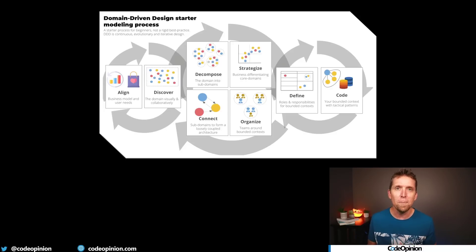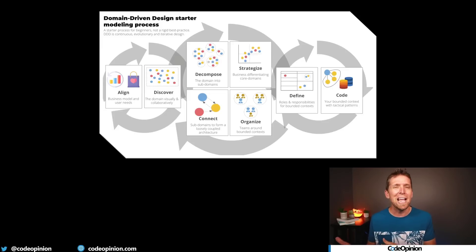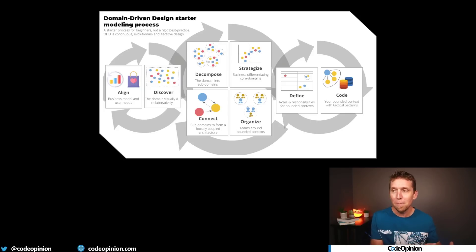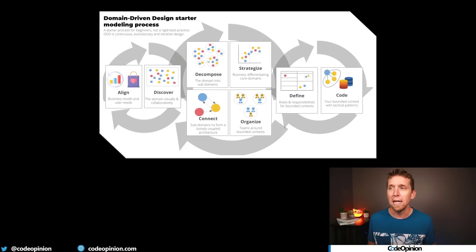Strategize, because not all logical boundaries are created equally. Some are more important — where the complexity and your competitive advantage lives. Figure out how all those logical boundaries connect to each other, since there are handoffs between workflows across boundaries. Organize your teams around this — who's going to be writing the code for each boundary. Define the roles and responsibilities of that bounded context, what it's actually going to provide. Then code it, start coding, iterating. But you can see — you just don't start with the code.